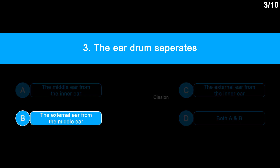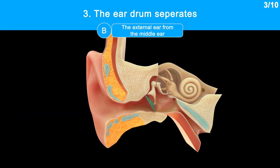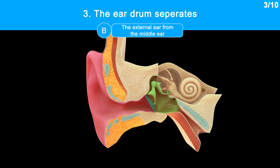The correct answer is option B, the external ear from the middle ear. The tympanic membrane, often known as the eardrum, is a thin membrane in the shape of a cone that separates the middle ear from the external ear.